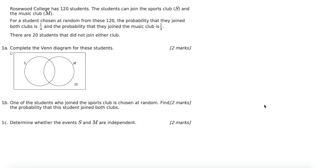Hopefully you've read the examples and attempted some of the questions. I'm going to go through two probability questions. The first one gives you a couple of probabilities and a total, which is going to be helpful. We have a probability they joined both clubs and a probability of joining the music club. Notice they've added a number here, so we'll have to find the amounts first. There are 20 students that did not join either club.